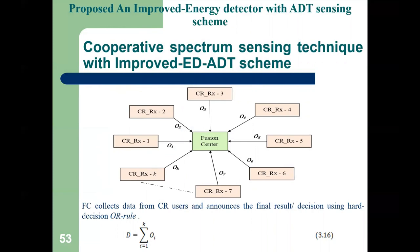Now we look at cooperative spectrum sensing. Previously we showed the behavior of our individual proposed energy detector. Now we combine the proposed model with multiple CR users in a cooperative network to show the impact on overall performance. The idea behind cooperative sensing is that several CR users report to a centralized Fusion Center, which makes the final spectrum sensing decision, and based on that decision the CR users operate.